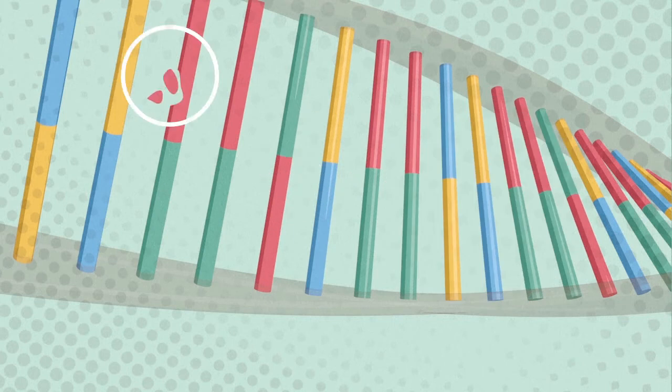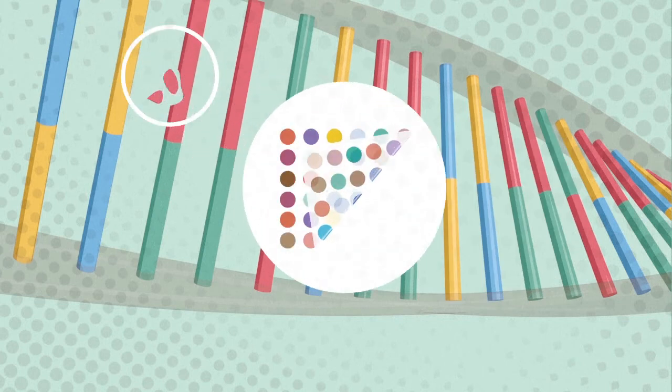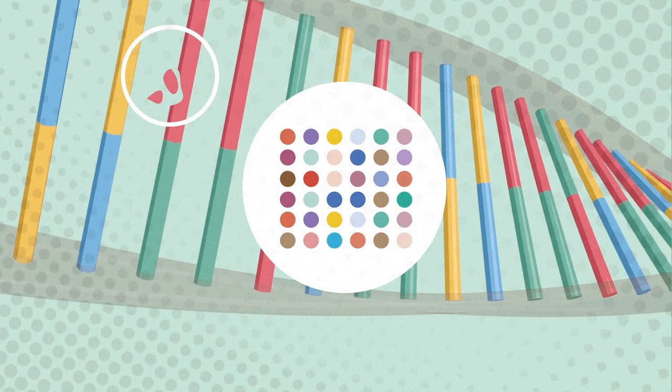Things go wrong when there's a flaw in the code called a mutation. A single misspelling in a gene can cause disorders such as colour blindness or a disease like cystic fibrosis.